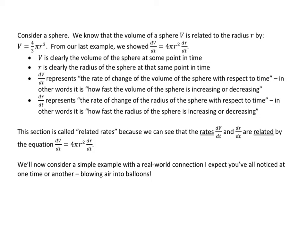To understand what these things mean, let's consider a specific case — a sphere. We know the volume of a sphere V is related to the radius by V = 4/3·π·r³. In our last example, we just showed that when we take the derivative with respect to t, we get dV/dt = 4π·r²·dr/dt. So what do all of these variables mean? V is clearly the volume at some point, and r is the radius at some point.